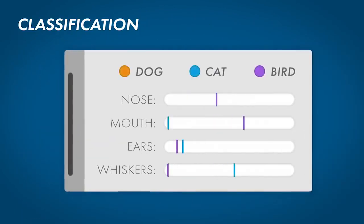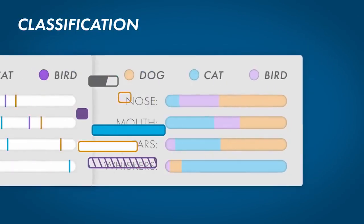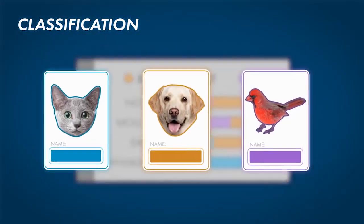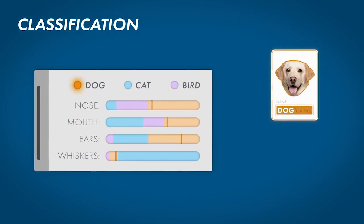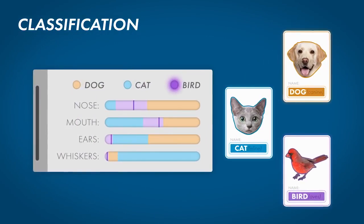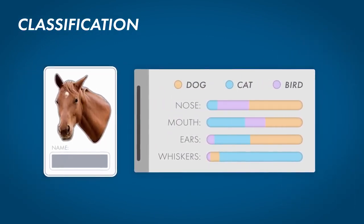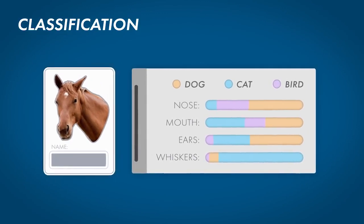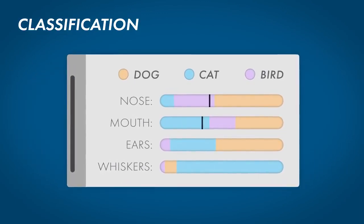You use these features to train a model, which will determine whether something gets labeled as a dog, a cat, or a bird. Now I give you a new image. What category does it belong to? Well, let's run it through the model to figure it out.